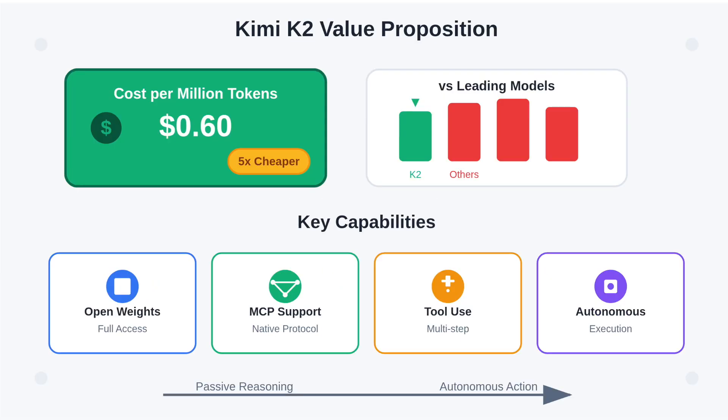Kimi K2 is not just performant — it's also cost-efficient. At 60 cents per million input tokens, it's about 5x cheaper than most leading models. With full open weights, native Model Context Protocol (MCP) support, and tool use capabilities, Kimi K2 signals a shift in AI from passive reasoning to autonomous multi-step execution.